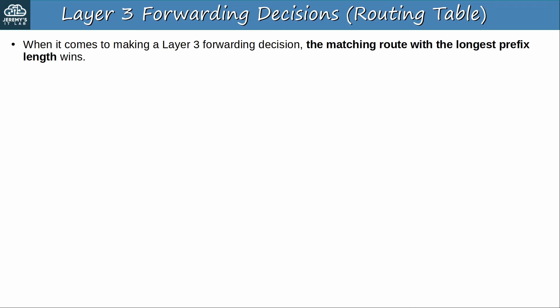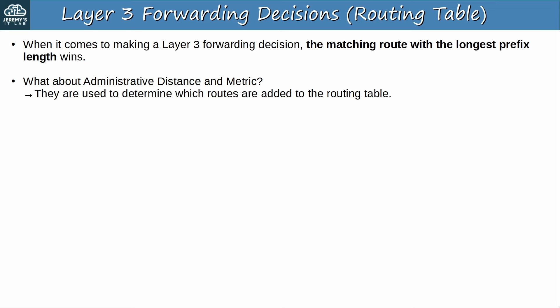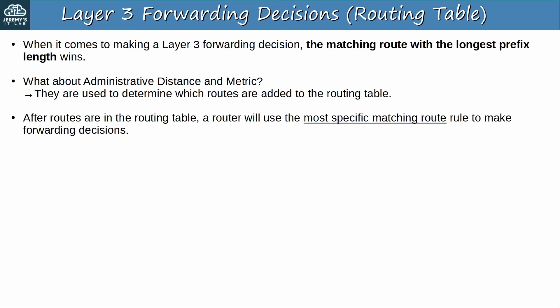When it comes to making a layer 3 forwarding decision, the matching route with the longest prefix length wins. You may be wondering about administrative distance and metric — they are used to determine which routes are added to the routing table. For example, if a router learns two routes to 192.168.1.0/24, one from EIGRP and one from OSPF, it will select the EIGRP route because it has a lower AD. Or if two routes to 10.0.0.0/24 are both learned via OSPF, it will select the route with the lower metric. But after routes are in the routing table, a router will use the most specific matching route rule to make forwarding decisions — it won't look at AD and metric.